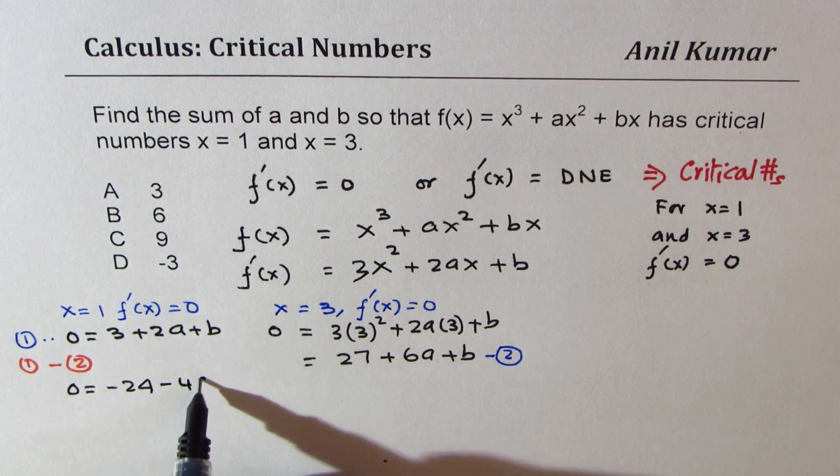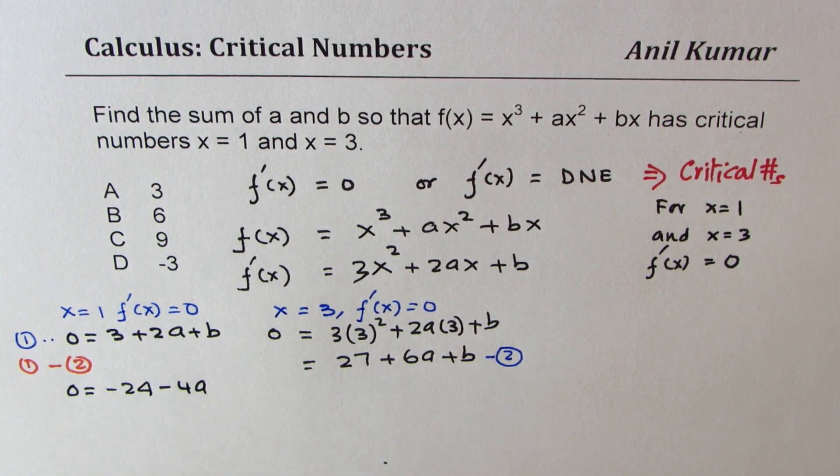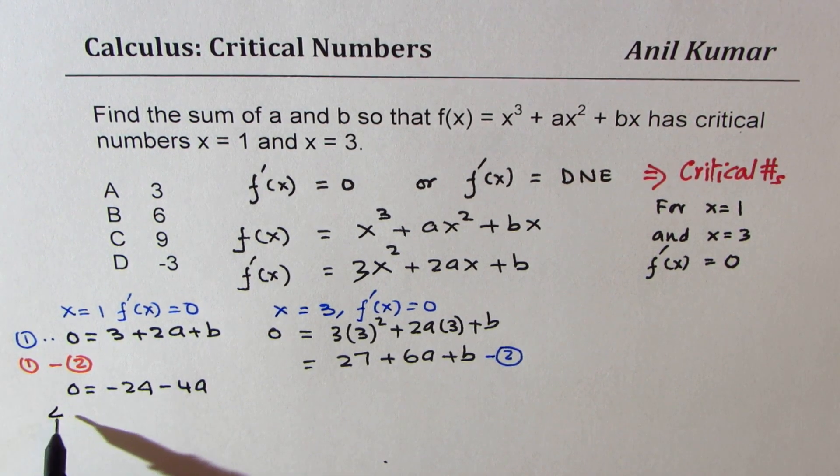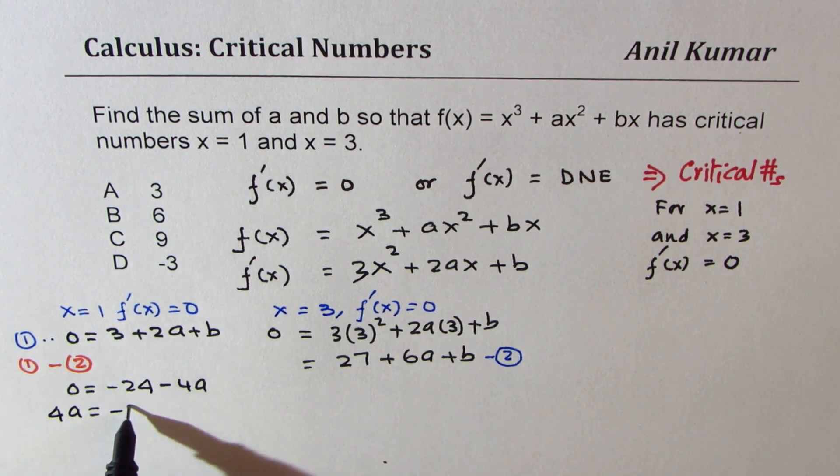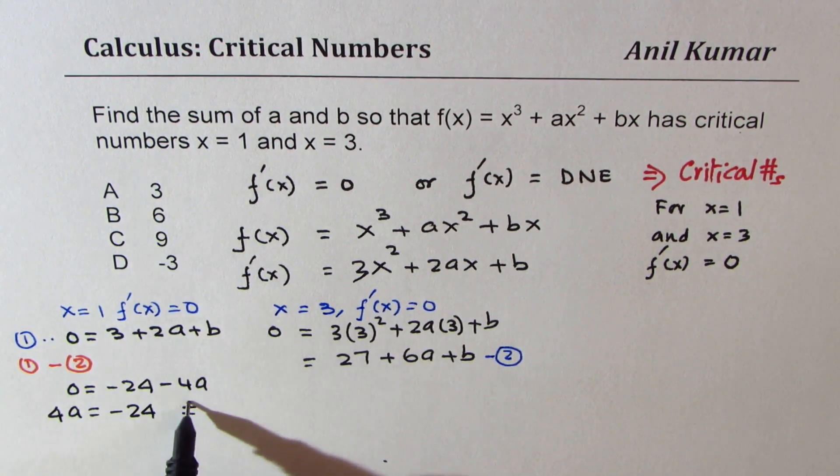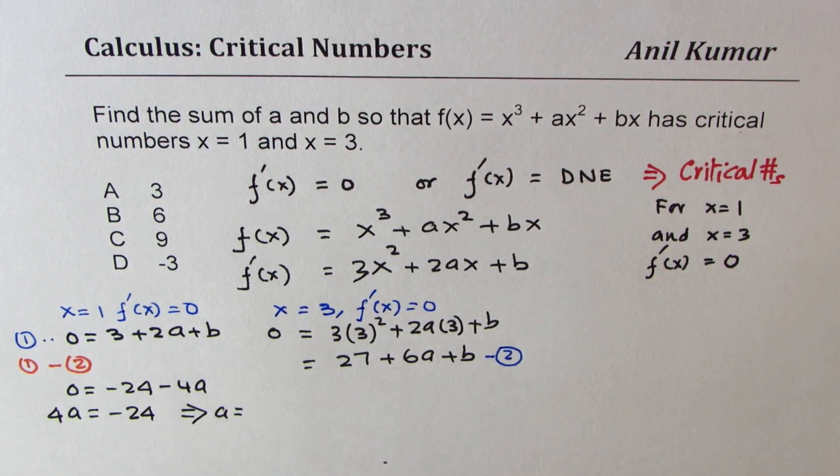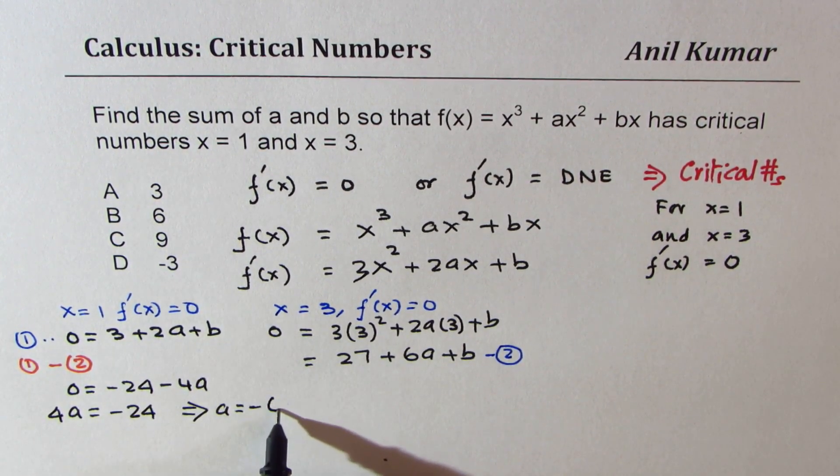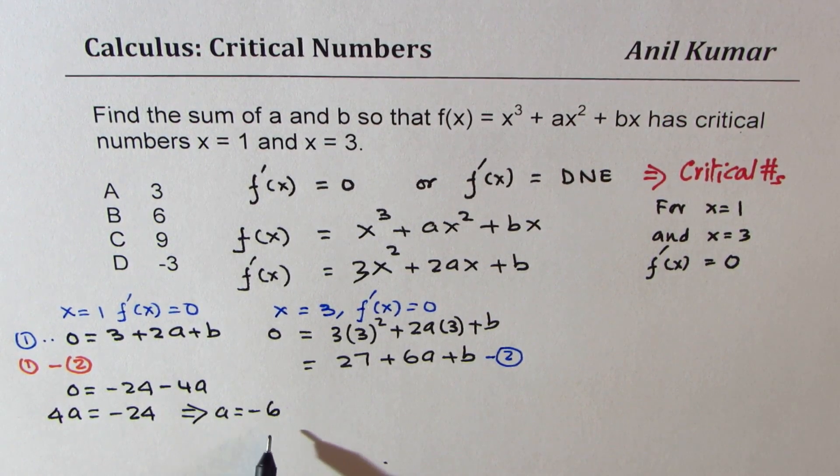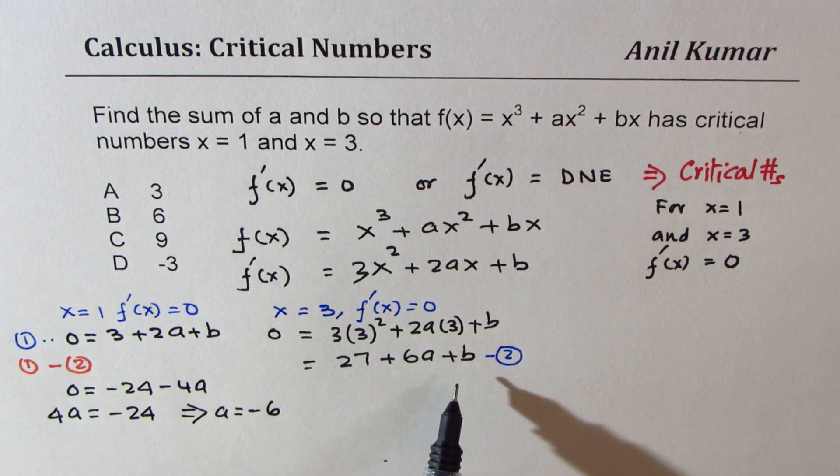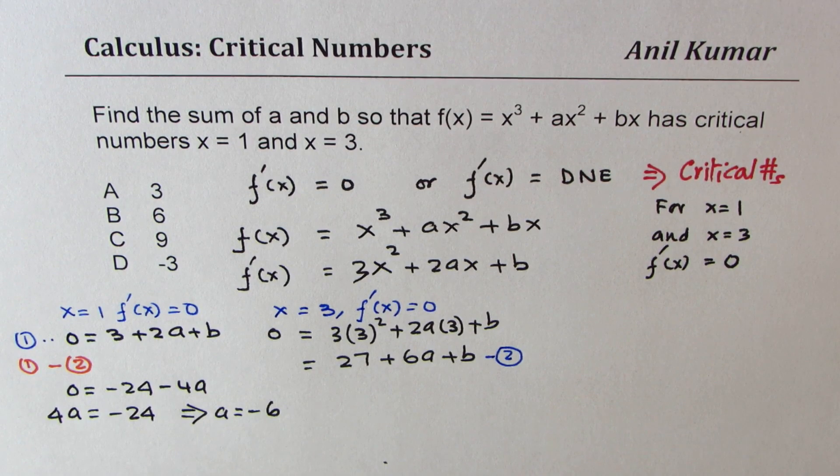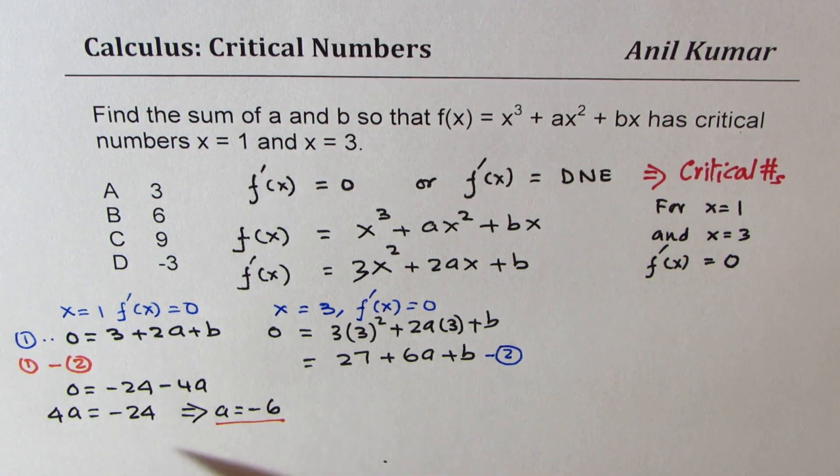So we get -4a = -24, which gives us a = -6. Now if a is -6, we can find what b is. So let's call this value a = -6 as our equation number 3.